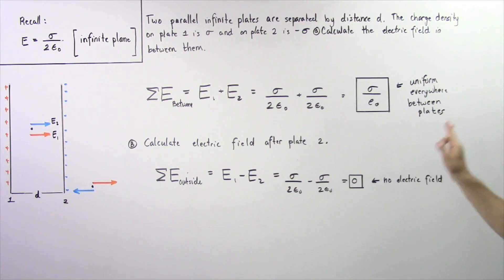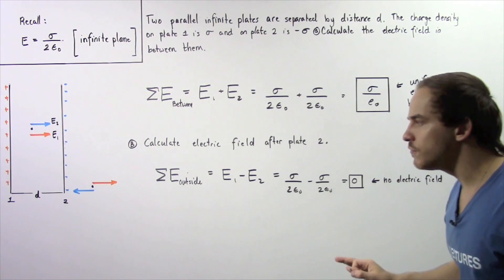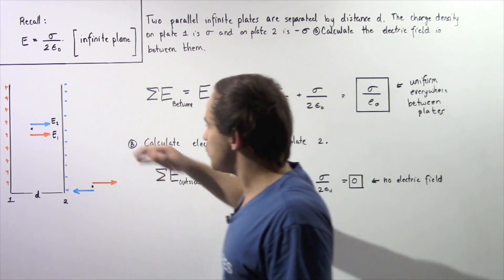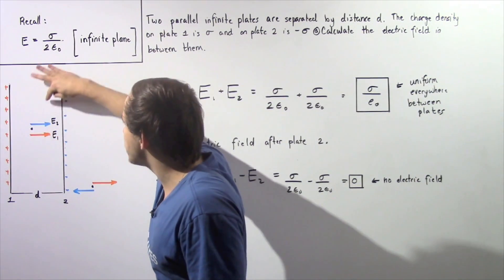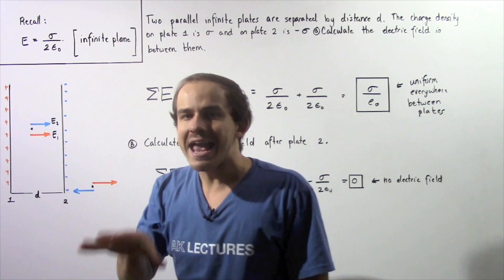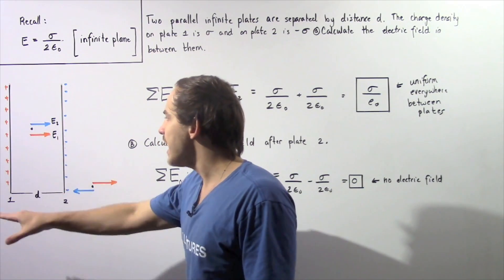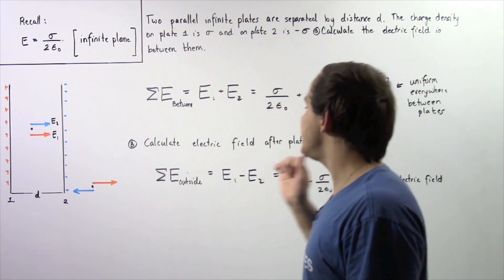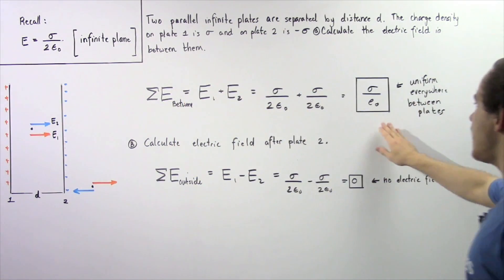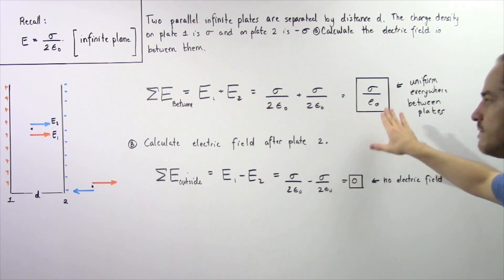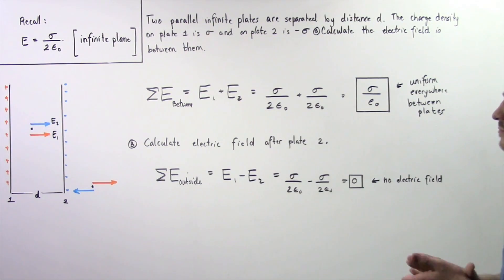Adding these two quantities gives our net electric field in between the two parallel infinite plates. Notice our electric field is uniform — it doesn't matter if we choose this point, this point, or this point anywhere in between our two plates, the electric field will be exactly the same and equal to sigma divided by epsilon naught.